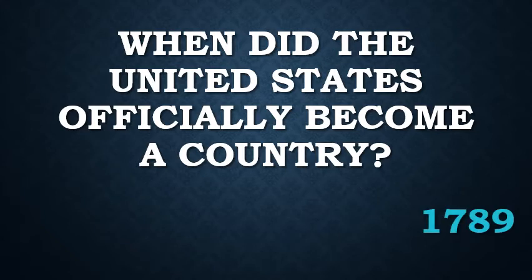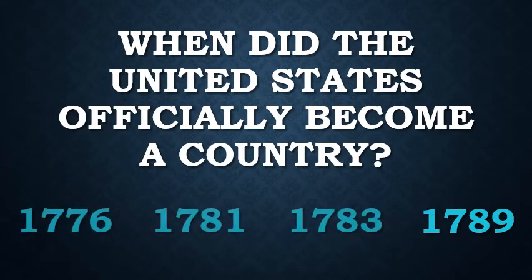Finally, 1789 — 16 years later — marks the ratification, or approval, of the Constitution and the birth of the US government as we know it today. The older system gave almost all rights to individual states to govern as they wanted, so before that it was more like the European Union than a single unified country. Without a doubt, the reason this is not an official question on the civics test is that it does not have a clear answer. What would you say? Write your answer in the comments below — let's get a debate going and practice that English.